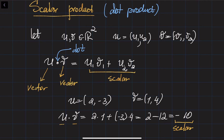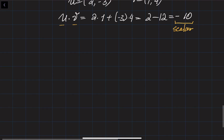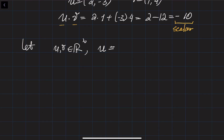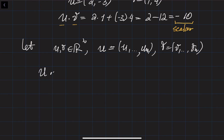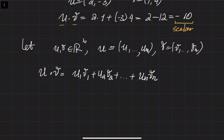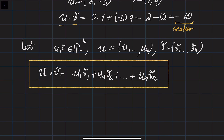We can generalize this idea for higher dimensional cases. If you are given two vectors u and v from Rn — n-dimensional vectors — where u = (u1, u2, ..., un) and v = (v1, v2, ..., vn), then the scalar product u dot v equals u1 times v1 plus u2 times v2 plus ... plus un times vn. This is how we define the scalar multiplication of two vectors in higher dimensional spaces.